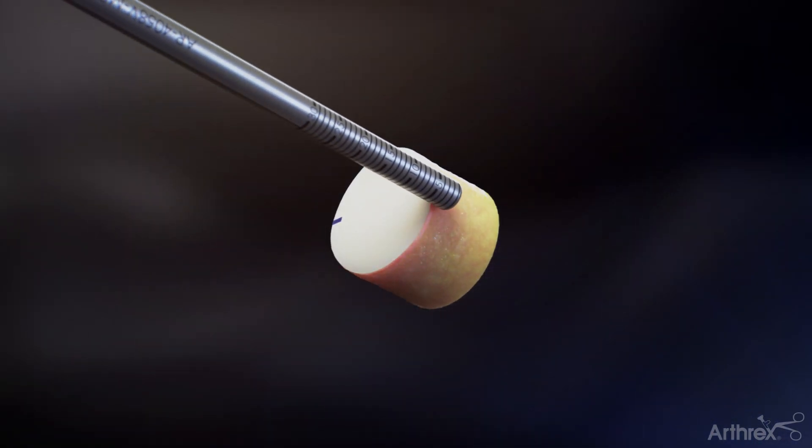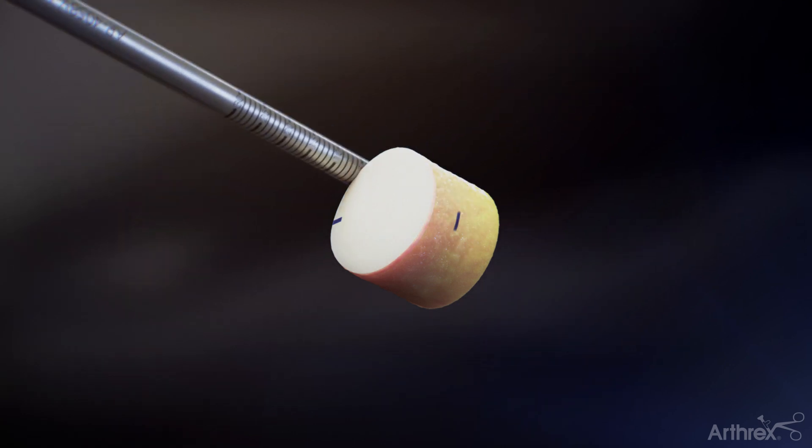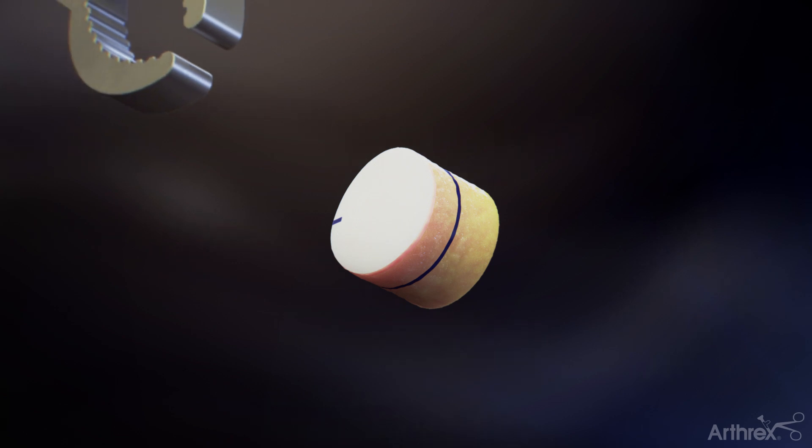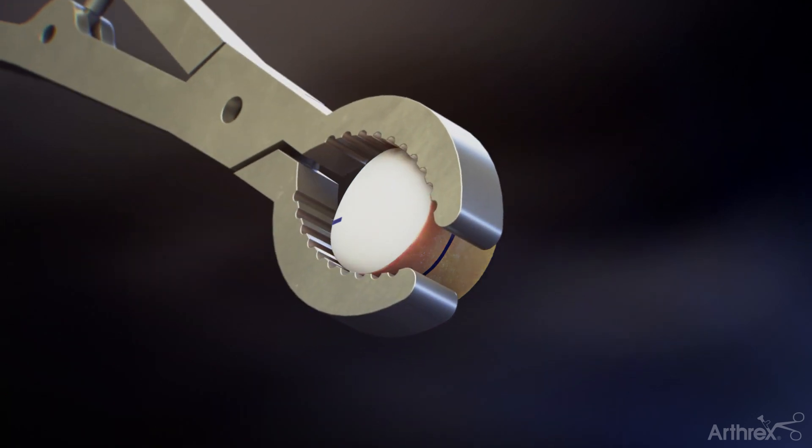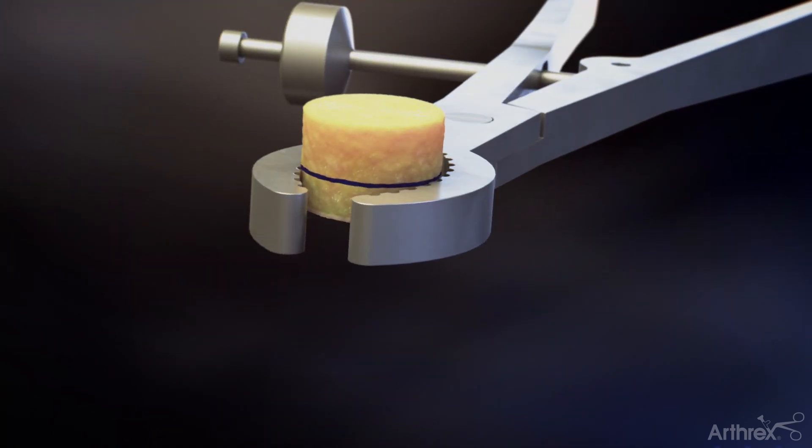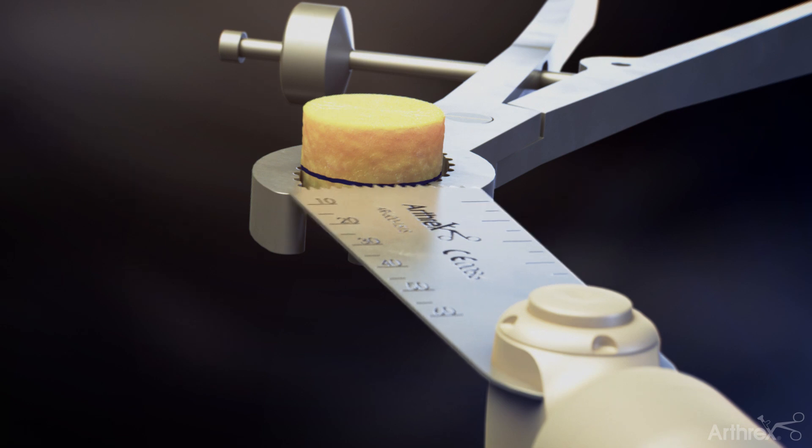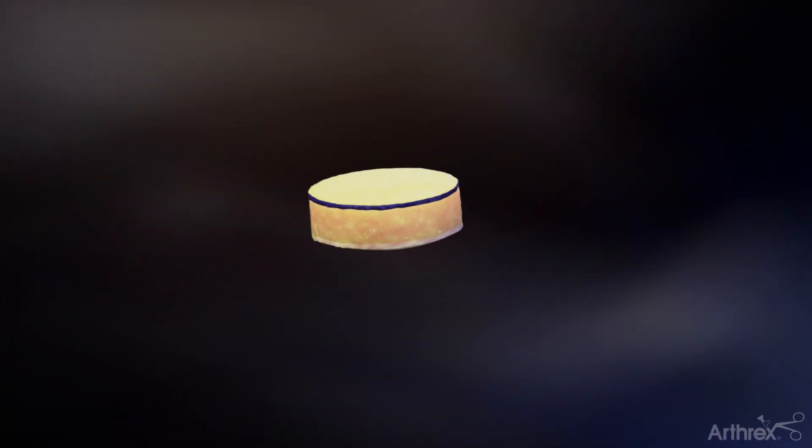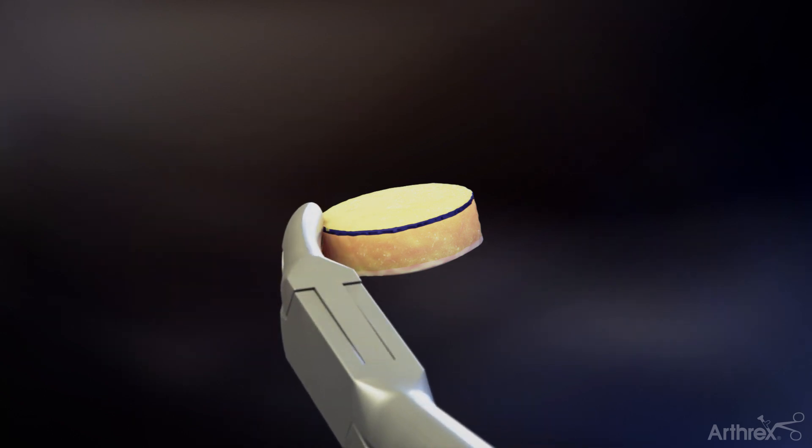Mark the depths recorded from the recipient socket on the four quadrants of the graft. Then draw a circumferential mark on the bone. Secure the graft in the allograft OATS holding forceps and use a saw to slowly trim it to achieve the appropriate length of bone to ensure a press fit in the recipient socket. Bulletize the graft with a ranger to assist with insertion.